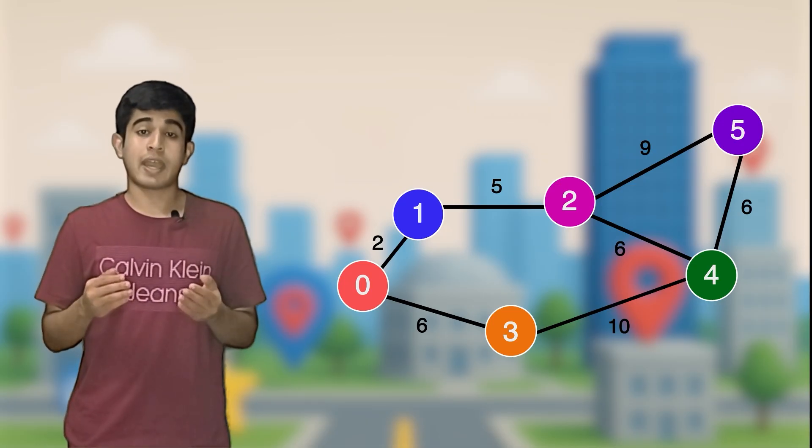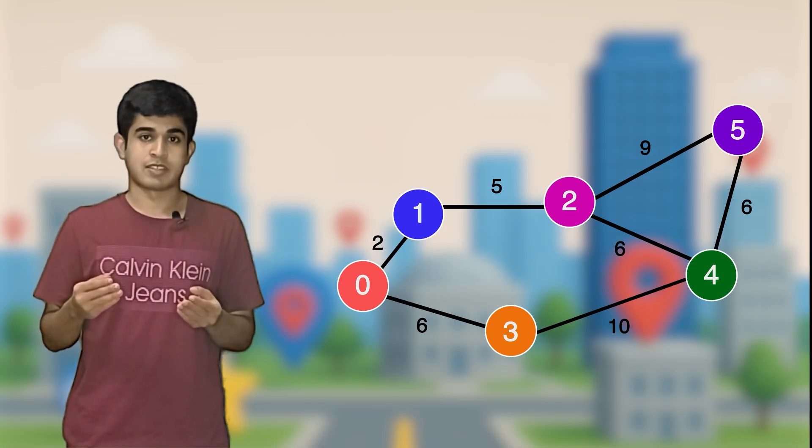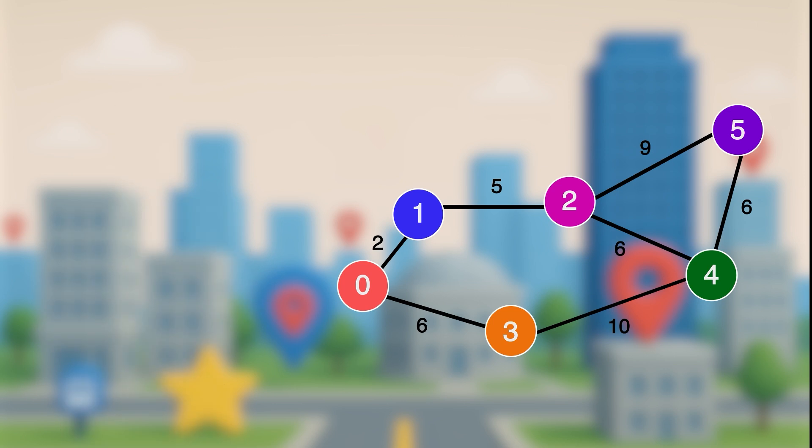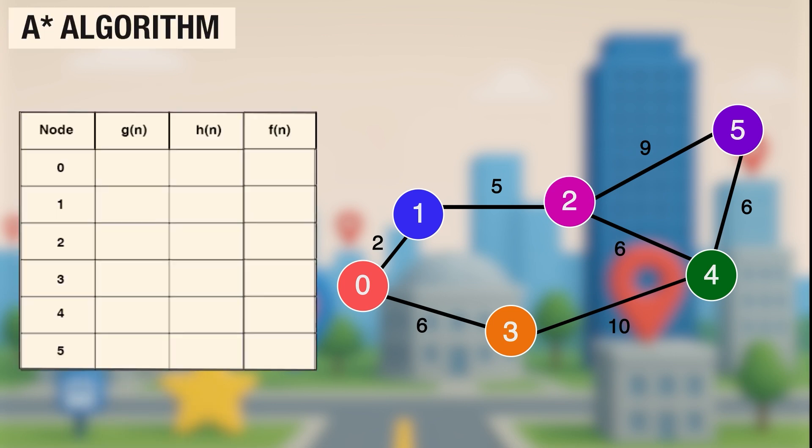Let's now take a look at an optimization of Dijkstra's, the A-star algorithm. A-star works like Dijkstra, but with an extra helper H, there is a heuristic number of how far the node is from the destination. We add G, that is the weight on the edge, and H, that is the heuristic number, to get F, and always pick the spot with the smallest F.